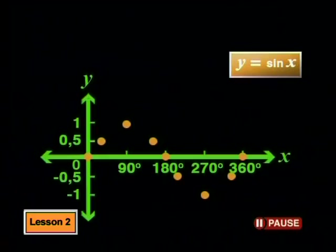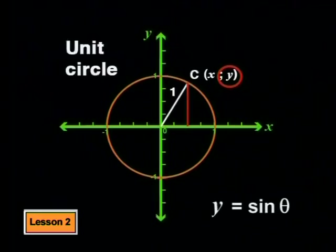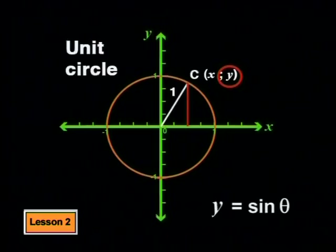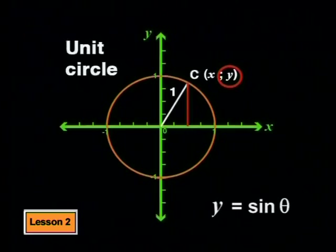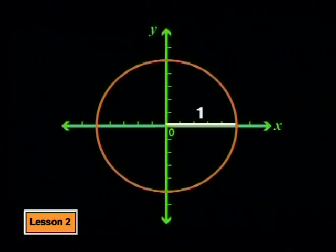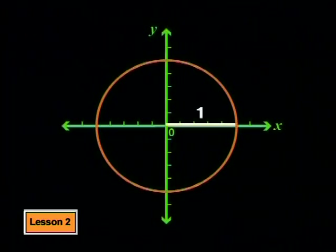Do you think you can sketch the graph using these points only? We can't assume that there are straight lines between the plotted points. We need to know more about the points that are in between the plotted points. Let's look at the unit circle again to help us here. Remember that in this circle, r is 1 and so sine theta has the same value as the y coordinate of the end point of the line segment. To see what is happening to sine theta as theta increases, we can look at the height of y at each point.